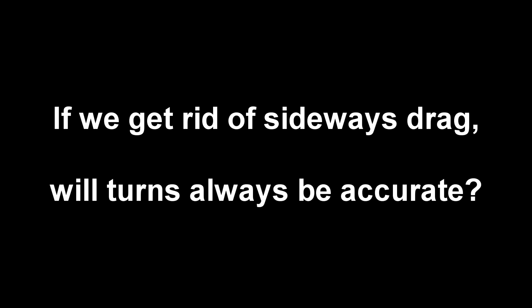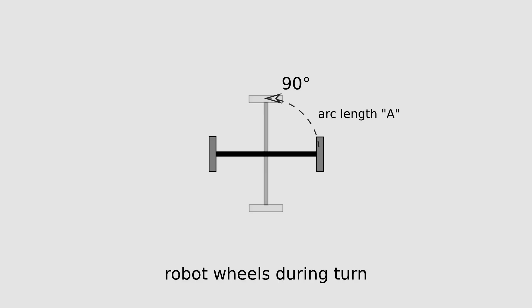Okay, if we get rid of sideways drag, will turns always be accurate? All we control directly is how far the wheels turn. How far that makes the robot turn depends on several other things.